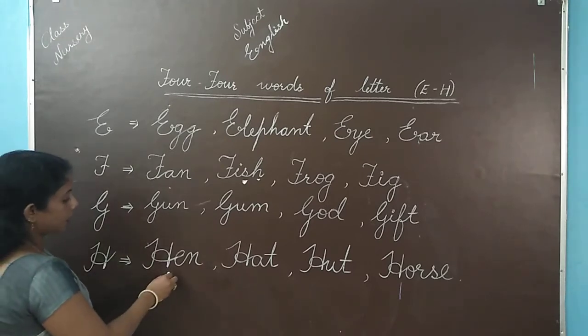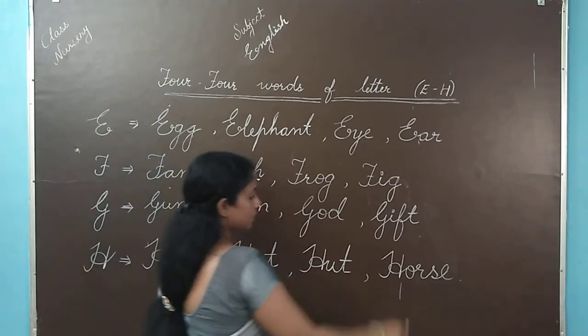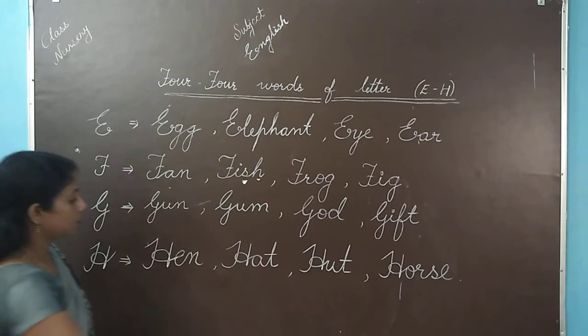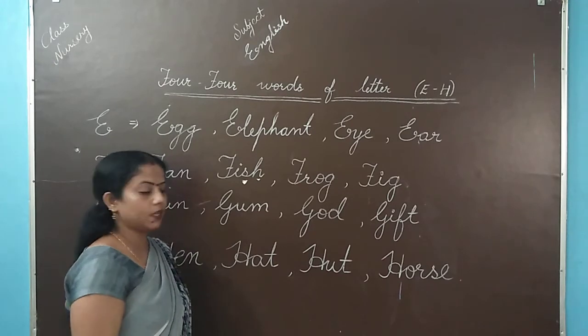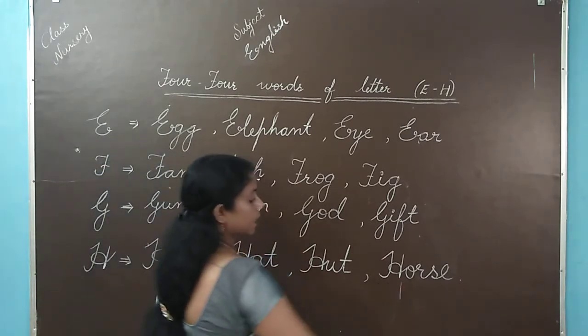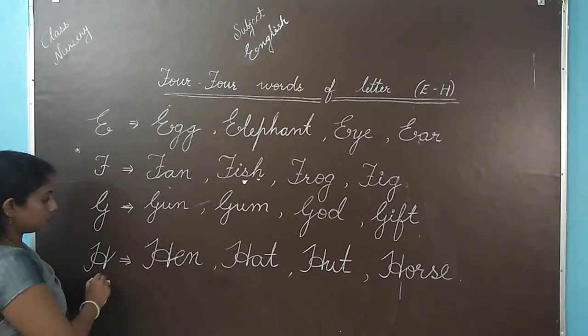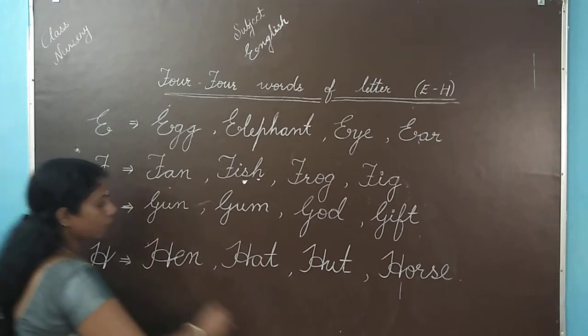The next letter is H. H for hen, hat, heart, horse. Hen yani murgi, hat yani topi, hat yani jhopdi, horse yani ghoda. Ghoda. H for hen, H for hat, H for heart and H for horse.